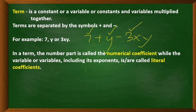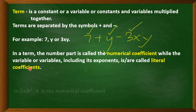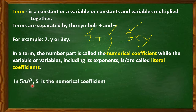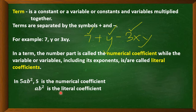In a term, the number part is called the numerical coefficient, while the variable or variables including their exponents are called literal coefficients. For example, in 5ab², 5 is the numerical coefficient, while ab² is the literal coefficient. That's the difference between numerical and literal coefficients.